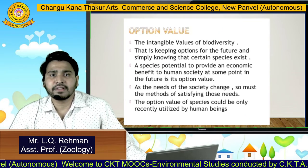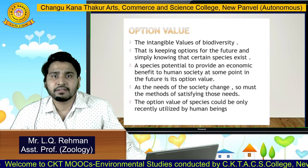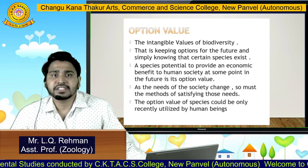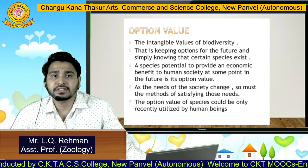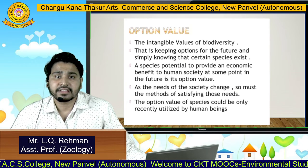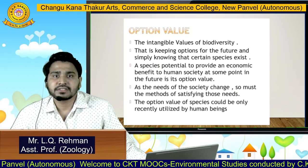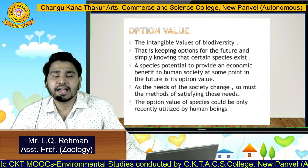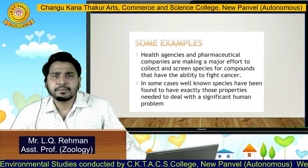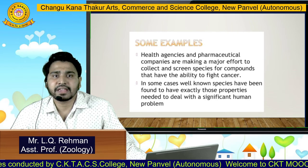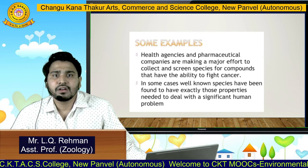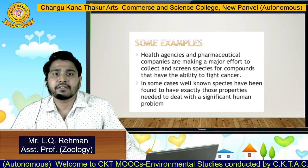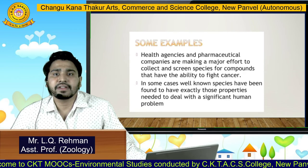The last is optional value — the intangible values of biodiversity, such as keeping options for the future and simply knowing that certain species exist. A species' potential to provide an economic benefit to human society at some point in the future is its optional value. As the needs of society change, so must the methods of satisfying those needs. Some examples include health agencies and pharmaceutical companies making major efforts to collect and screen species for compounds that can fight cancer. In some cases, well-known species are found to have exactly those properties needed to deal with significant human problems.